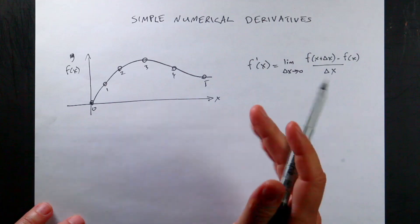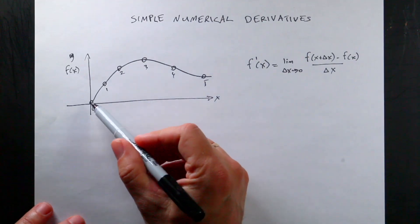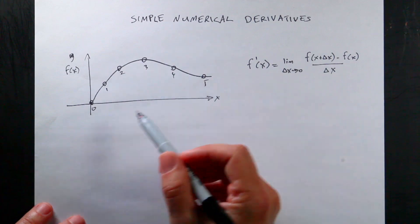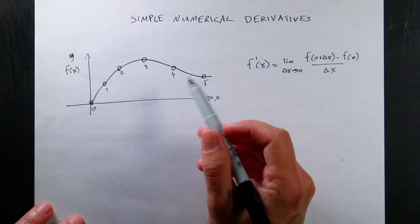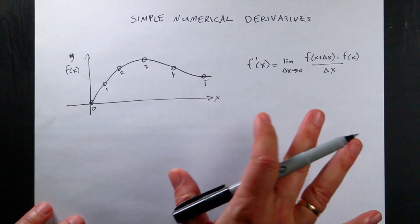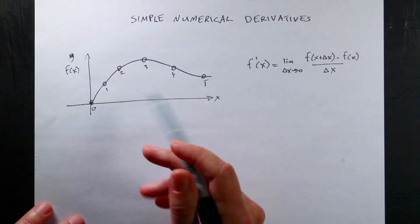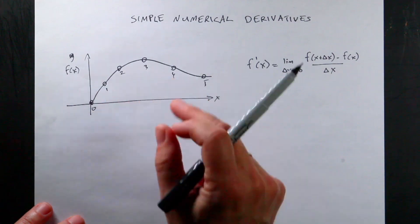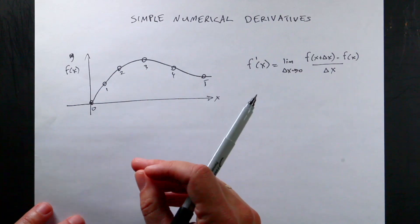One case where this could happen is if I'm modeling motion — getting x as a function of time and I want to find the x velocity. It could also be temperature versus time, where I have a temperature recorder that records the temperature, and I want to find the rate of change of the temperature.